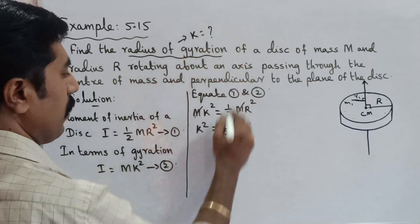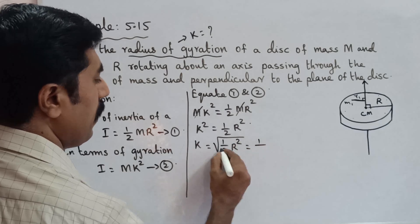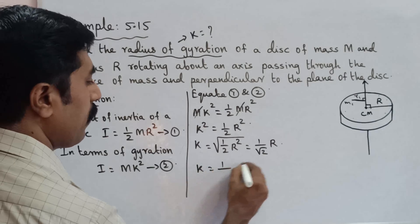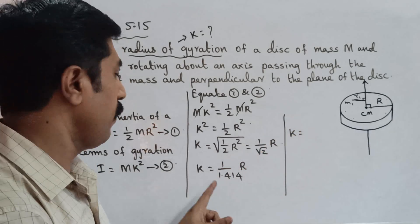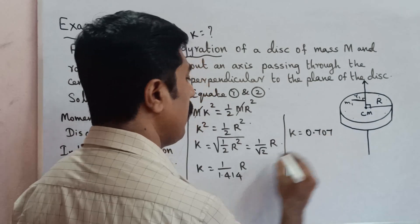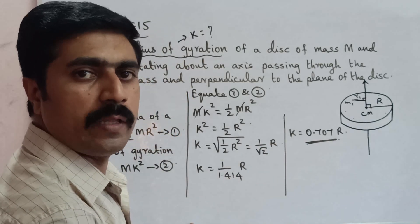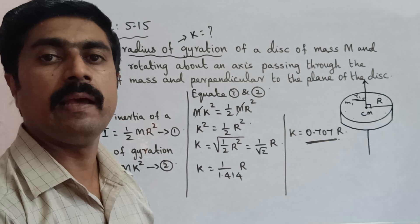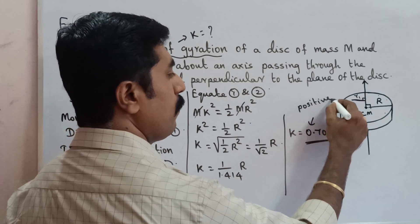Therefore, the radius of gyration K = √(1/2 · R²) = R/√2 = (1/1.414) × R = 0.707R. So the radius of gyration is 0.707 times the capital R, the radius of the disk.